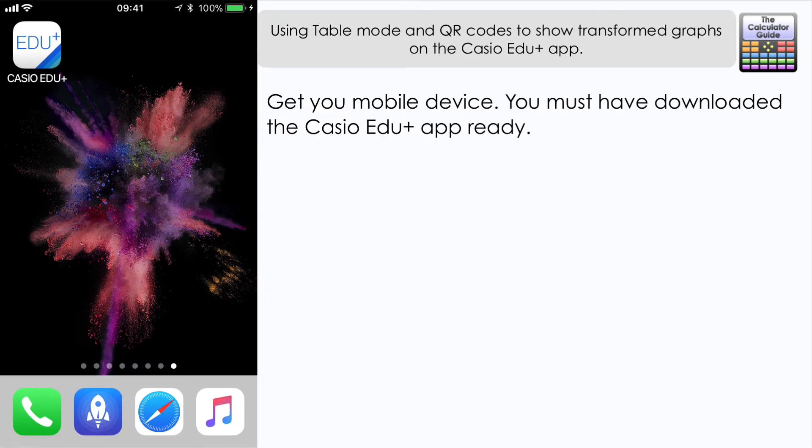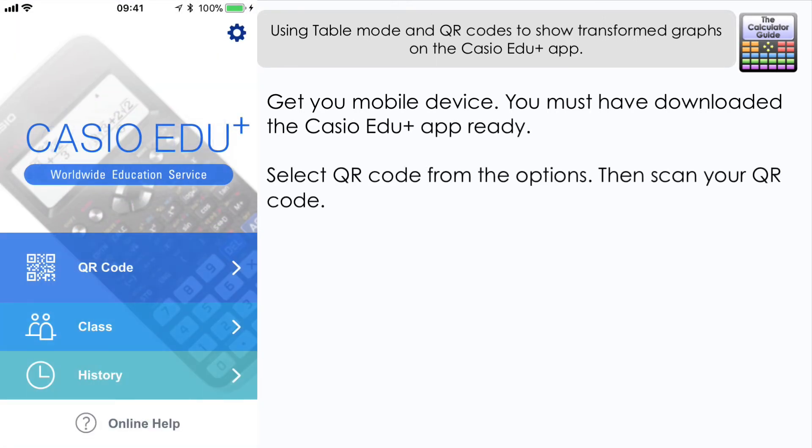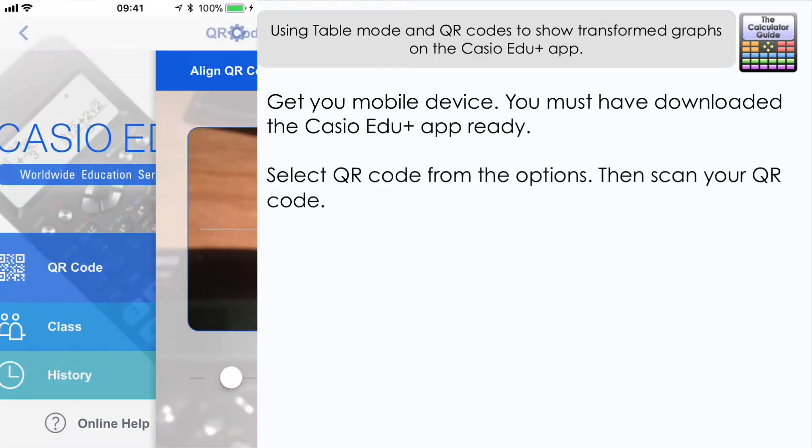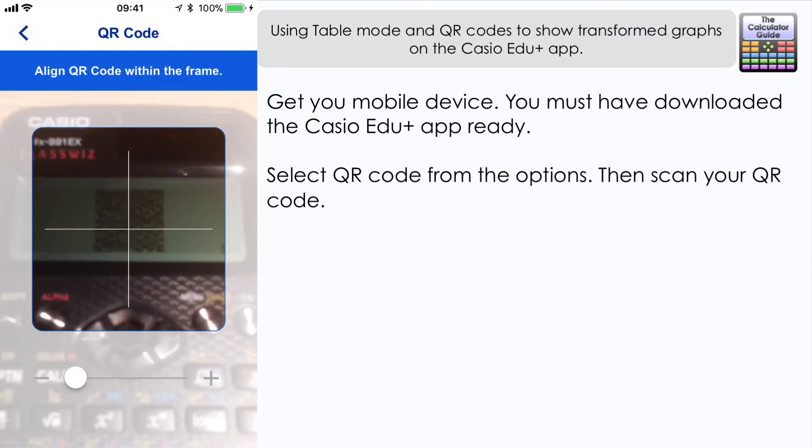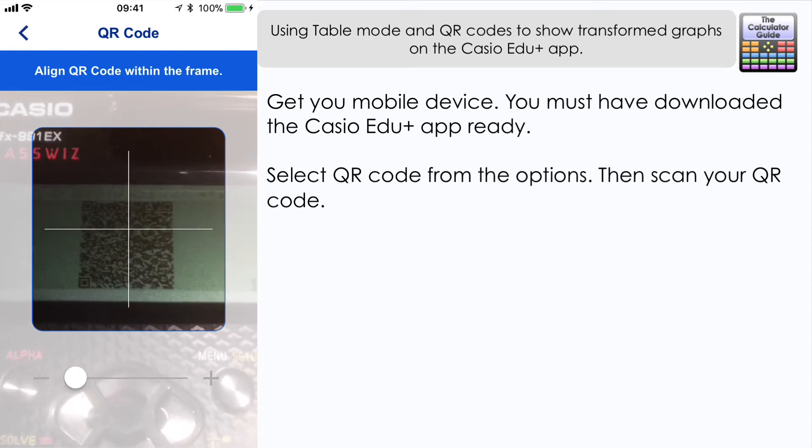Next we need to go to our mobile device. I'm doing this on my iPhone and access the Casio Edu+ app and we want to select the first option, the top option there, QR code. Now I'm going to scan the QR code from the actual ClassWiz here rather than the computer emulator and I would recommend that you do it in an environment with good light so that the QR code is nice and clear for your phone's camera.